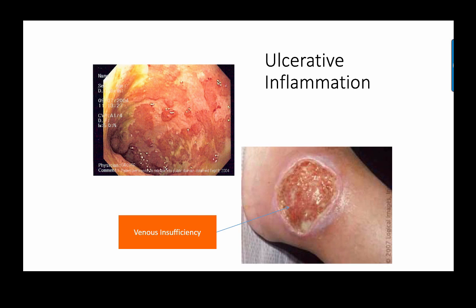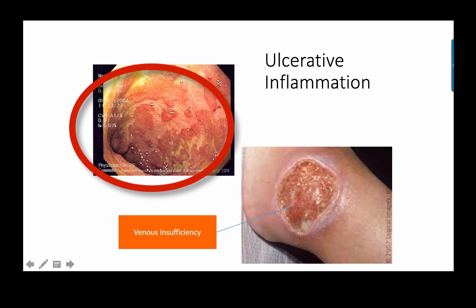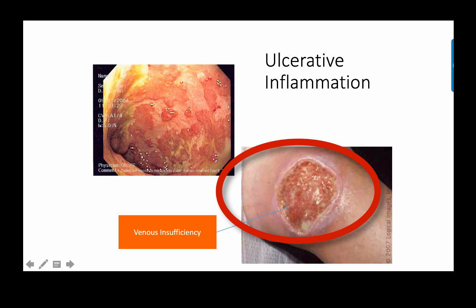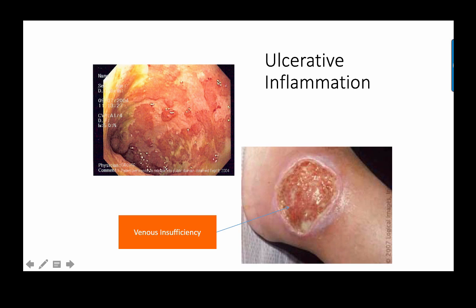Ulcerative inflammation is characterized by loss of the epithelial lining of body surfaces or mucosal lining of hollow organs such as the stomach or colon, and may extend into connective tissue underneath. Shown here is a wound from venous insufficiency where the epithelium has been eaten away, exposing connective tissue. Treatment focuses on prevention of infection, reduction of edema, removal of exudate, and pain management. Ulcerative inflammation is very painful and takes a long time to heal, often becoming chronic in patients with poor circulation.